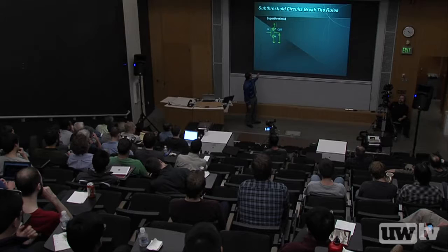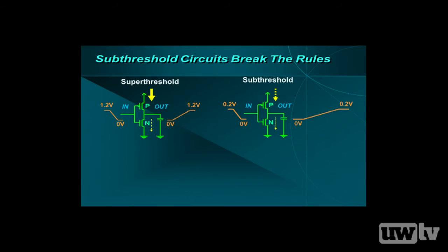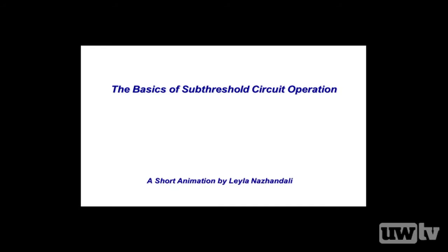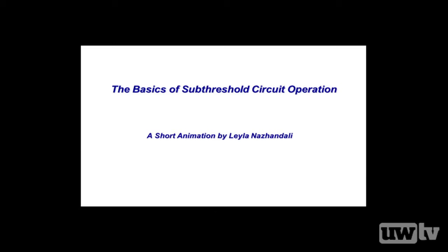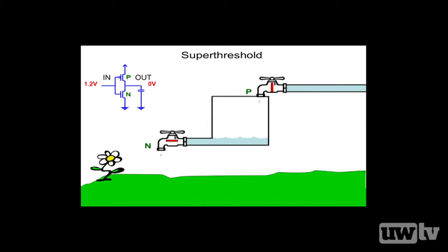We can use voltages that turn on these transistors and see the output slam up and down in 20 picoseconds — fast. But if we start lowering the voltage, it still works but takes a long time. At sub-threshold voltages, the on-current and off-current are very close to each other. To demonstrate this, I'll show an animation by my graduate student Leila Nazhandali, now faculty at Virginia Tech, who taught me that the place to learn about sub-threshold voltage is the garden. We'll use a leaky bucket as an analogy for a transistor.